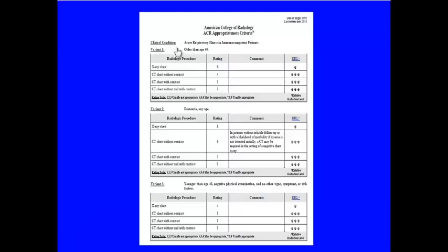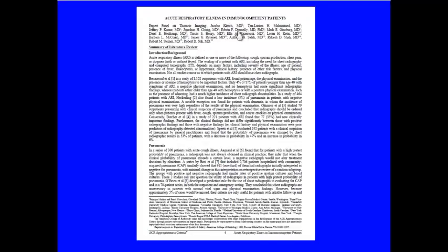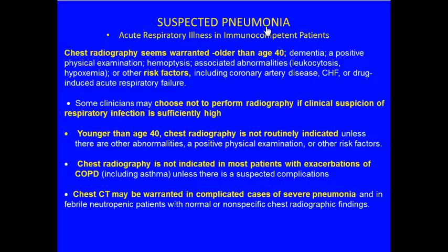We've picked a few topics: acute respiratory disease, cancer staging, the nodule, and screening for metastasis. If we pick respiratory illness, we come to an appropriateness criteria page with different variants — patients older than 40, younger than 40, etc. — with suggested modalities, an appropriateness scale, and evidence-based discussion describing the workup for pneumonia.